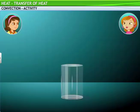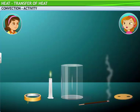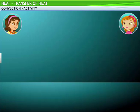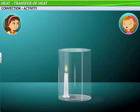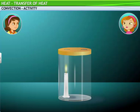We will need a cylindrical glass trough, a lit candle, a lit incense stick, adhesive tape, and a circular cardboard with two identical holes. We start by placing the lit candle in the trough. Let's cover the trough with the circular cardboard in such a way that one of the holes is right above the lit candle. I will fix the cardboard to the trough with adhesive tape all around. Place the lit incense stick above the other hole of the cardboard. Now watch what happens to the smoke coming from the incense stick.